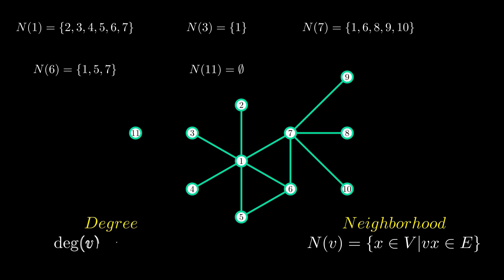The degree of a vertex is the number of edges it has, that is the cardinality of its neighborhood. So, those are some characteristics of a simple graph G.